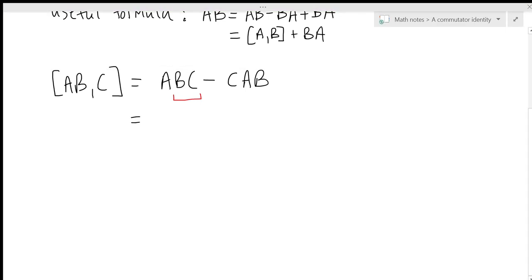So we write that this is equal to A times [B,C] plus CB. And then we have the last term here, CAB.